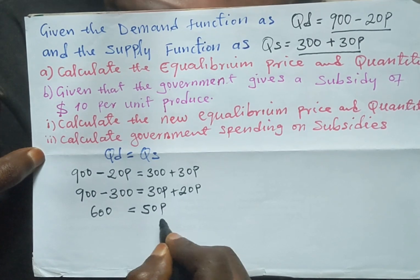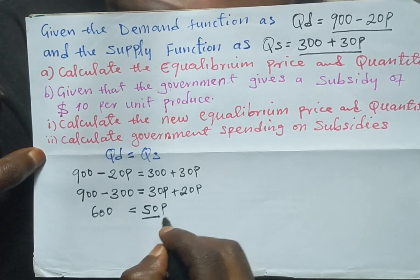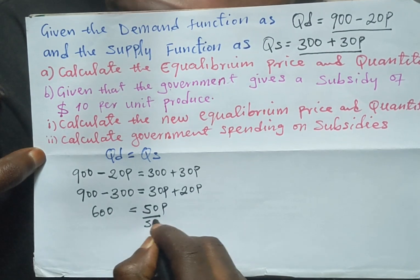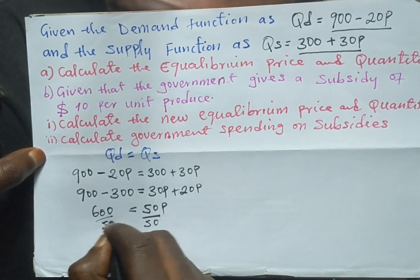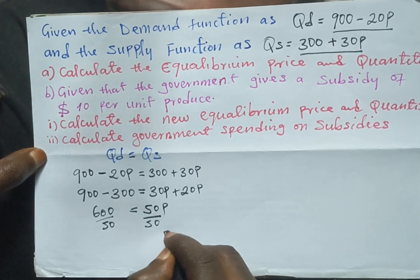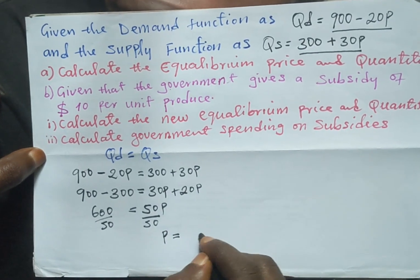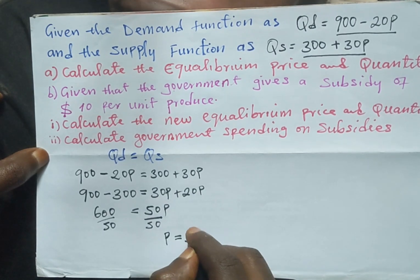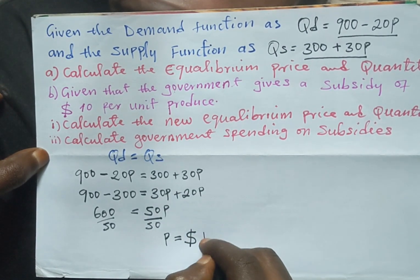From here we can divide both sides by the coefficient of P, so we divide both sides by 50. Our equilibrium price is therefore equal to 12 US dollars.